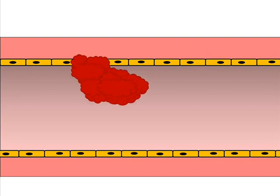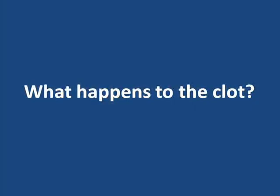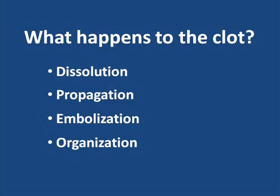Additional platelets and other blood cells are bound together by a meshwork of fibrin strands, and a substantial thrombus is formed. So after a potentially harmful clot begins to form, what naturally happens to it? What are the possibilities? There are four main possibilities: dissolution, propagation, embolization, and organization. And we'll go through each one of these.